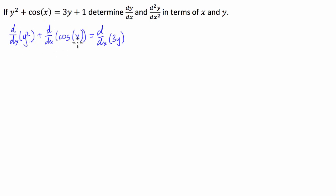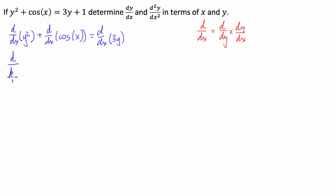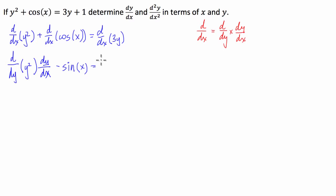The d/dx of cosine of x is quite easy. What we have to do here is use the chain rule to figure out what d/dx of y squared is. The way this works is: d/dx equals d/dy multiplied by dy/dx. So for this function we're going to have d/dy of y squared times dy/dx, minus the derivative of cosine x which is negative sine of x, equal to d/dy of 3y times dy/dx.